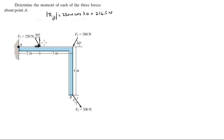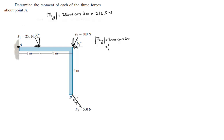Force 2 has both a Y component and an X component. The X component is aiming straight at A, so it creates no moment. The Y component of F2 has a magnitude of 300 times the sine of 60, which equals 260 newtons.